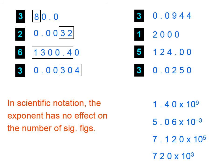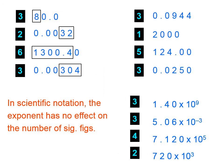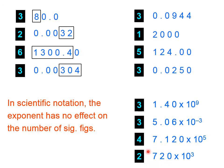In scientific notation, the exponent has no effect on the number of sig figs. The only thing we need to do is look at the quantity in front of the times 10 to determine how many significant figures it will have. So this first one should have three sig figs, the next one should have three, and this one should have four. In essence, we're just doing the box and dot method to the number that's in front of the times 10. The bottom number will have two significant figures. Note that the bottom quantity is not in proper scientific notation, but if we turn it into proper scientific notation, it would again have two significant figures.